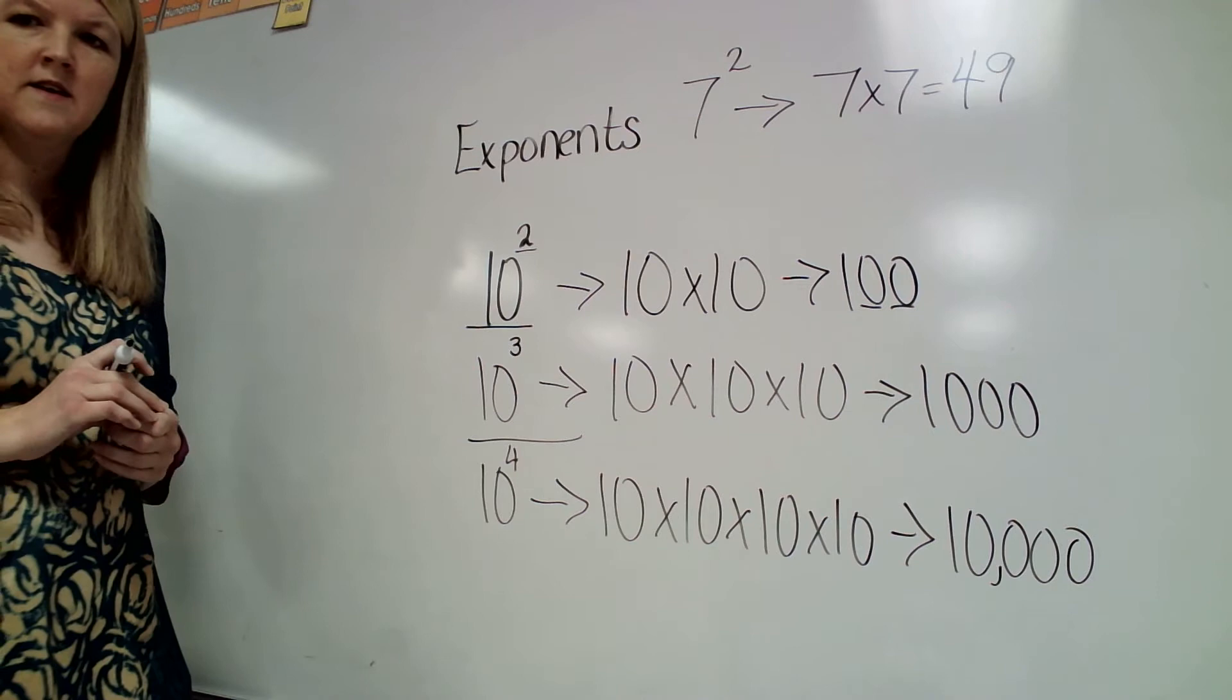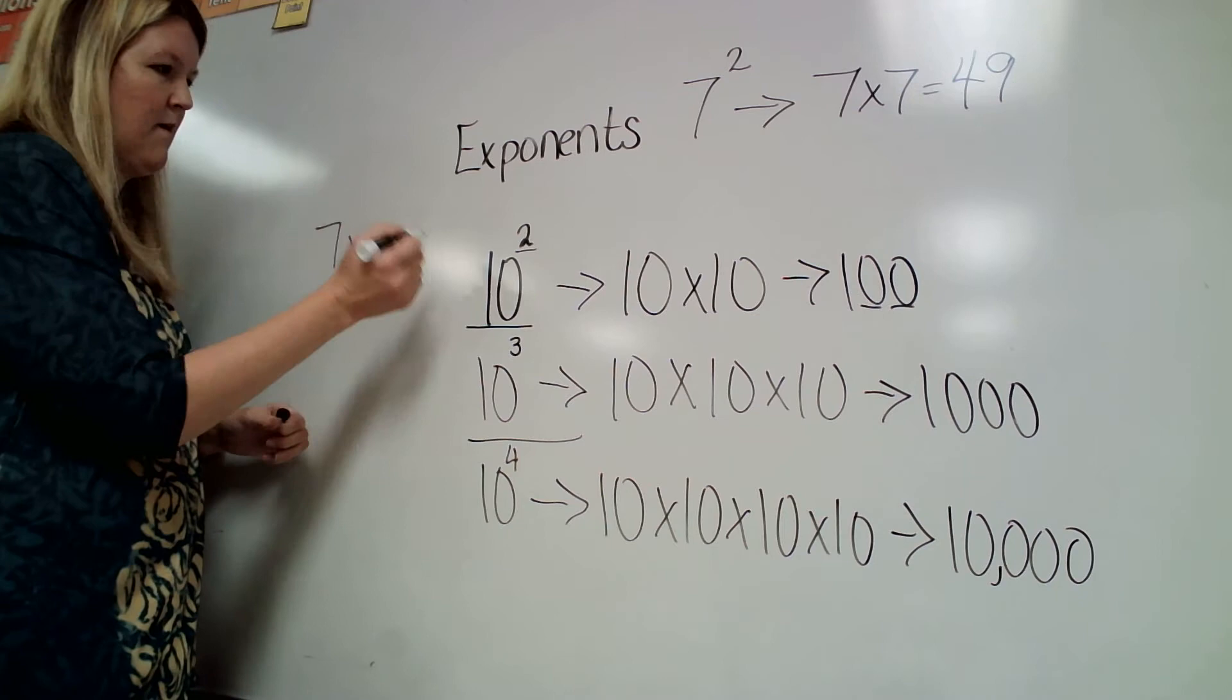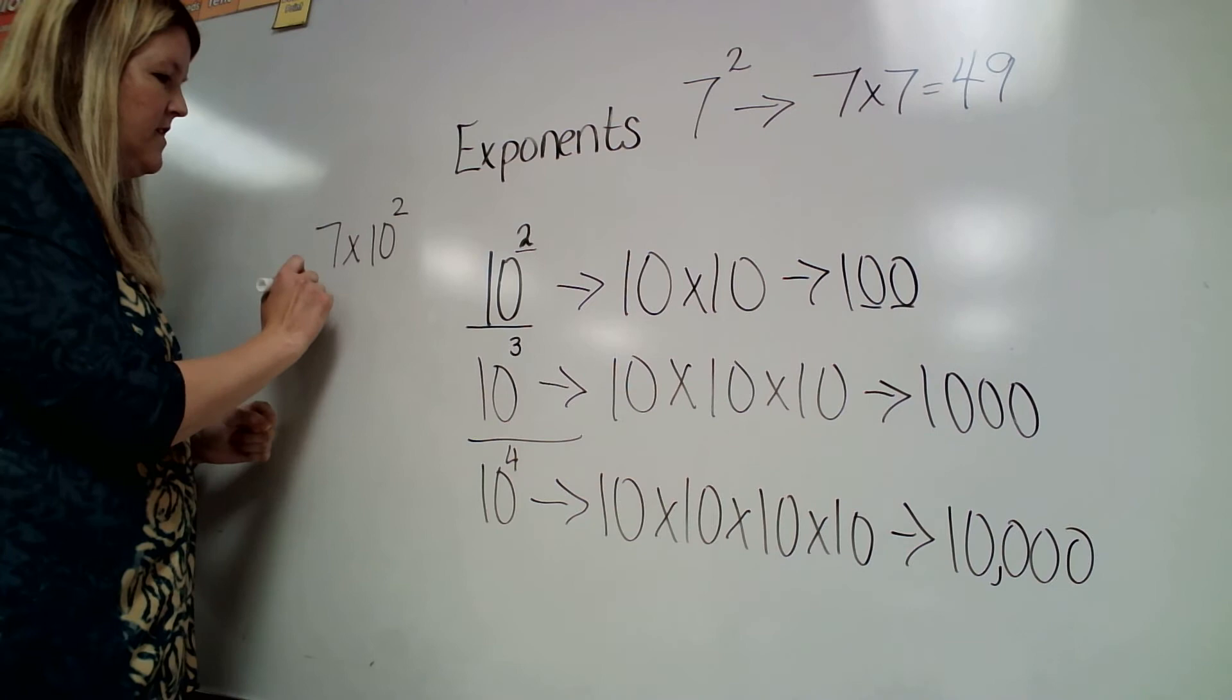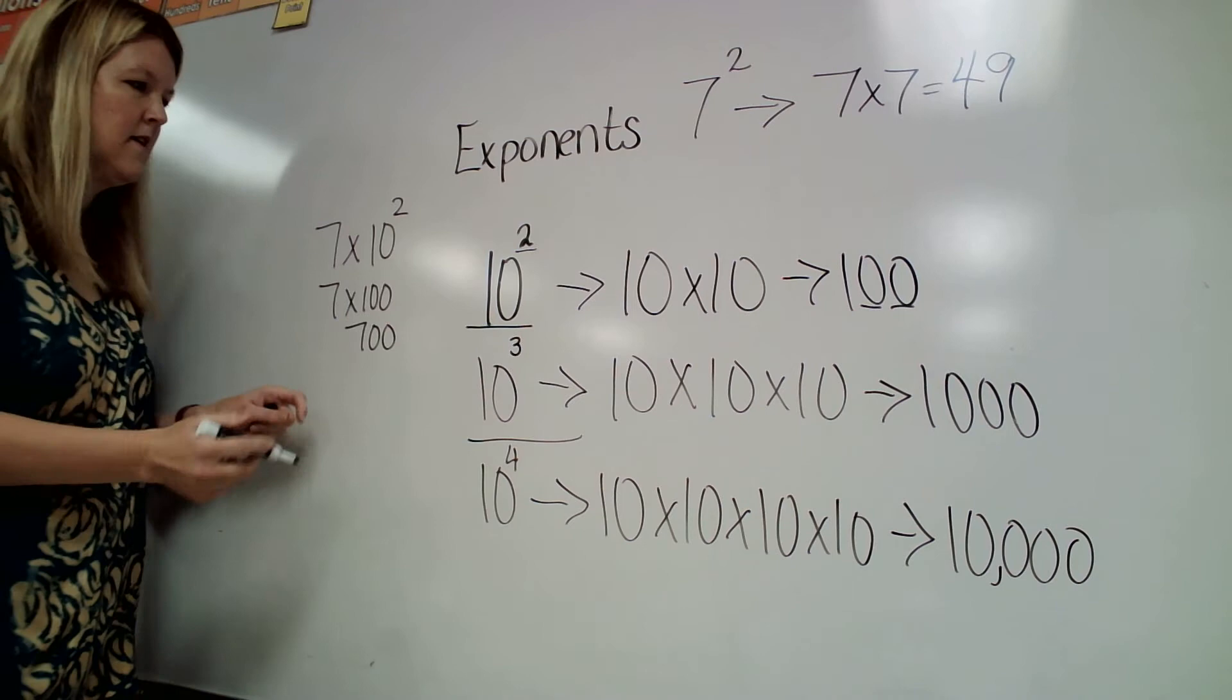Now when we're doing powers of 10, I may say multiply 7 times 10 to the 2nd power. So I know that's the same thing as multiplying 7 times 100 – because 10 to the 2nd power is the same thing as 100. So I would just multiply 7 times 100, which would give me 700.